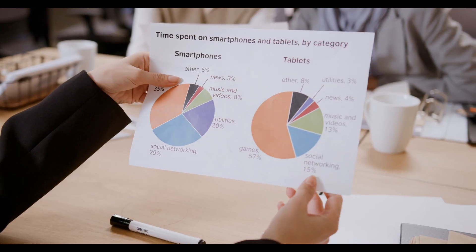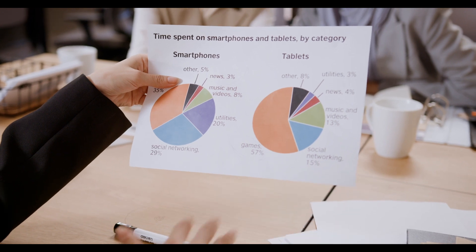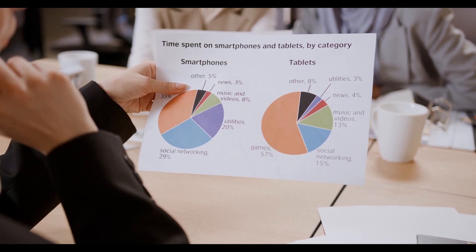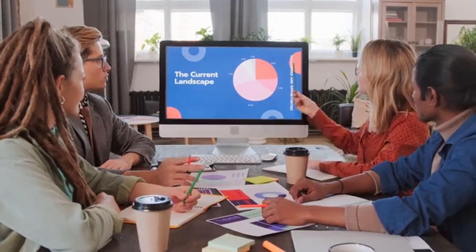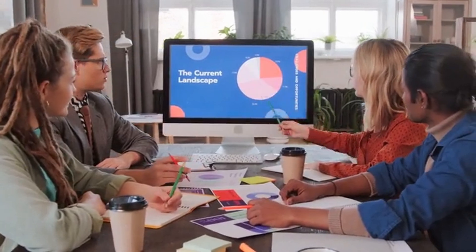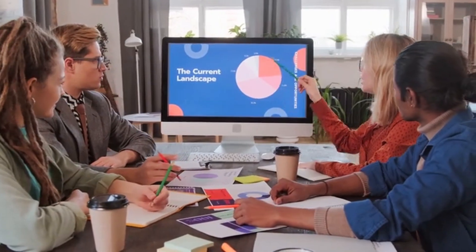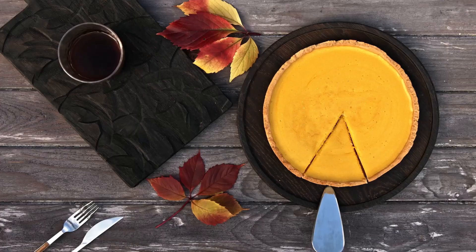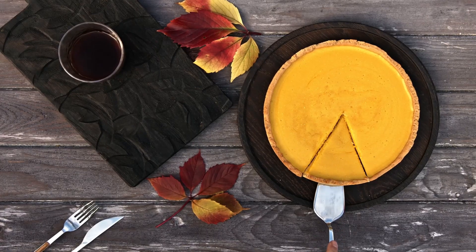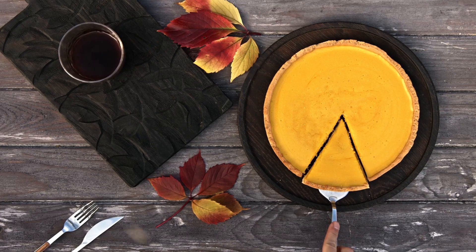Pie charts often represent distinct categories of sample data, with the whole circle, or pie, representing 100% of the data. Just like pies, pie charts are sliced proportionally to the quantity it represents.